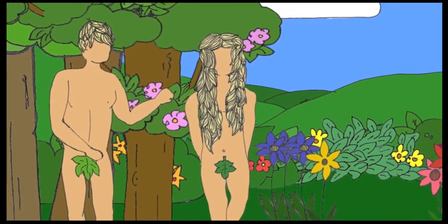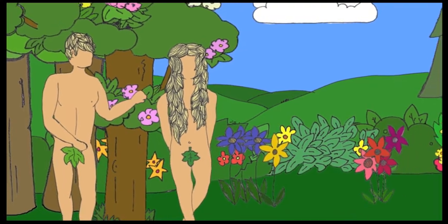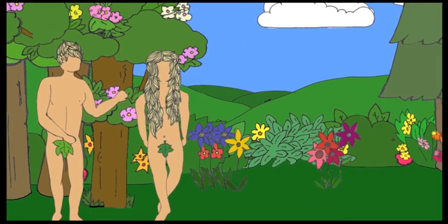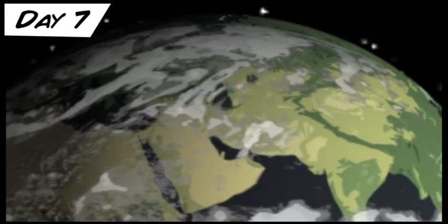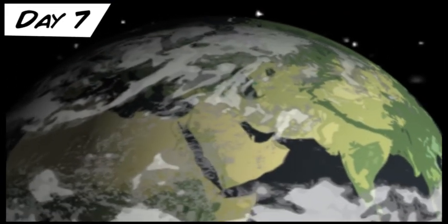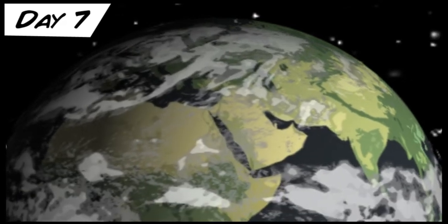This explains why a man leaves his father and mother, and is joined to his wife, and the two are united into one. Then God looked over all he had made, and he saw that it was very good. Evening passed, and morning came, marking the sixth day.